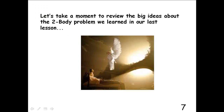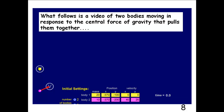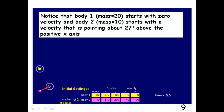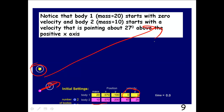Let's first take a moment to review the big ideas from the two-body problem we learned in our last lesson. What follows is a video of these two bodies moving in response to a central force of gravity that pulls them together. Notice that body 1 of mass 20 starts with zero velocity, and mass 2, which is half as massive as the heavy body, starts with a velocity pointing upward. So since we have initial linear momentum, the whole system is going to move off in that direction.